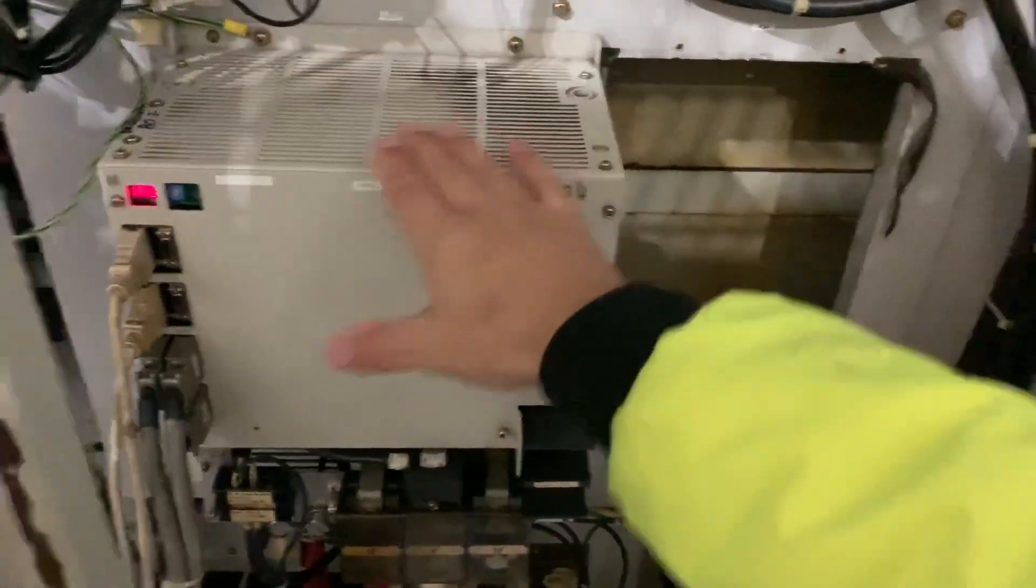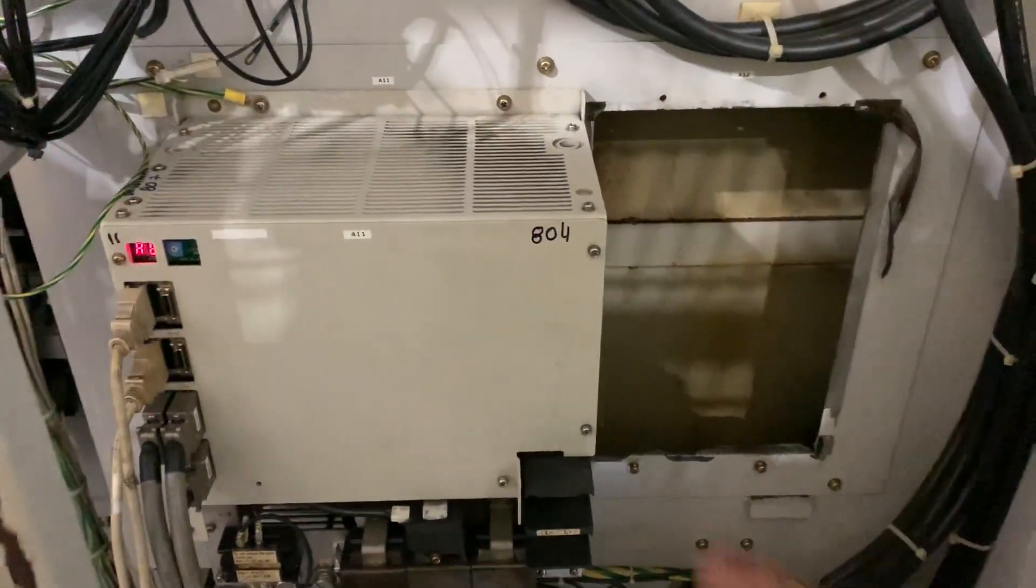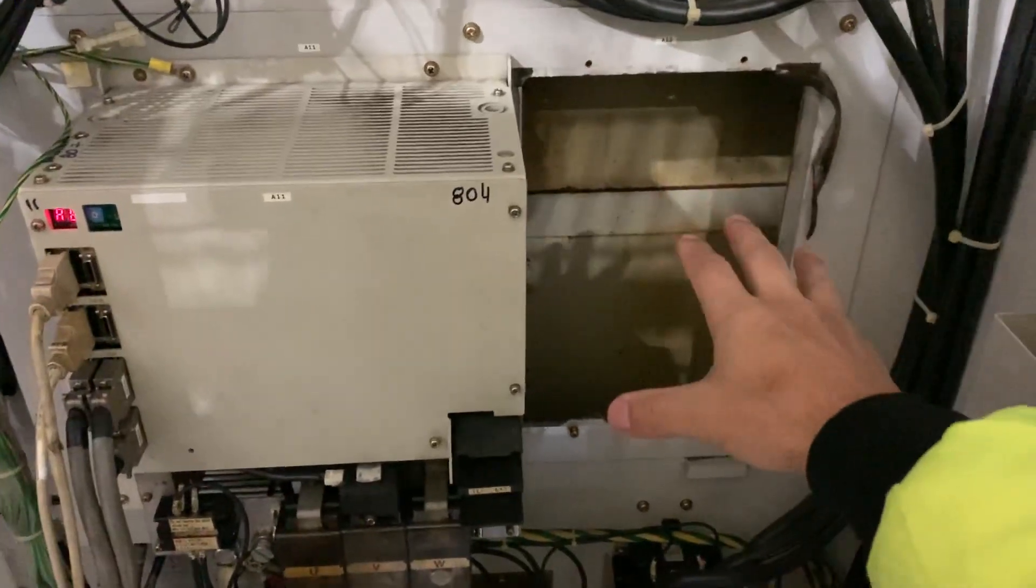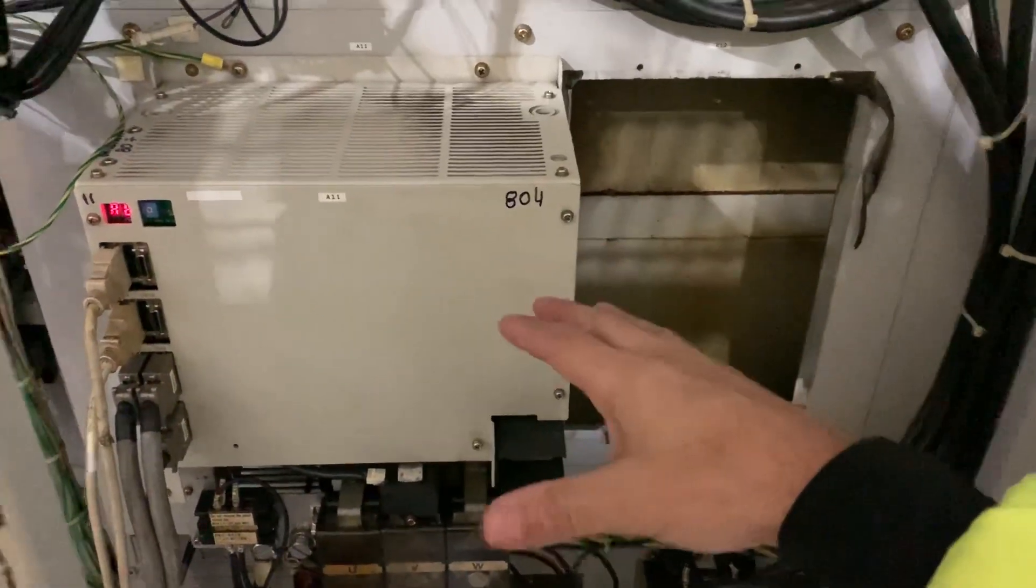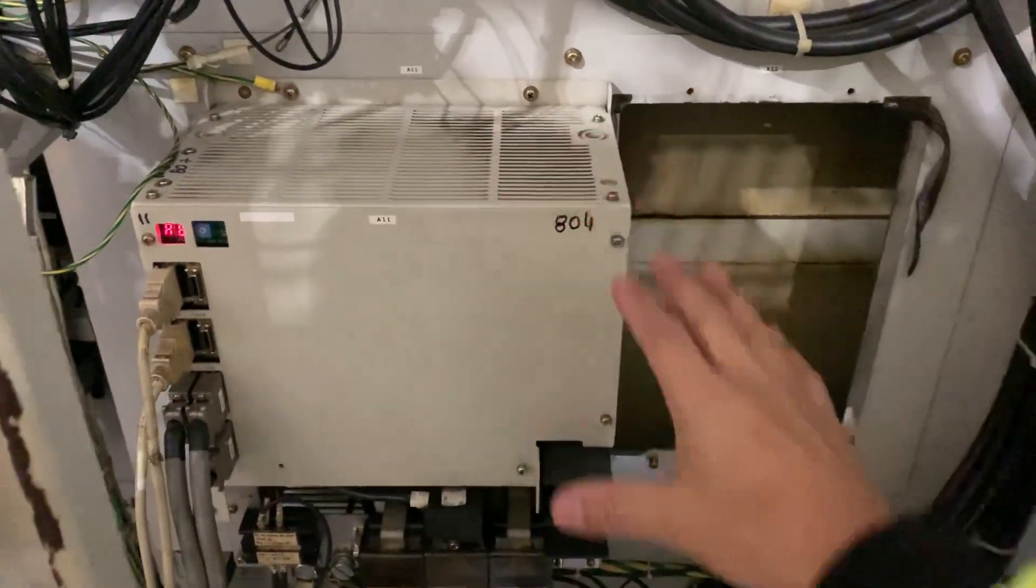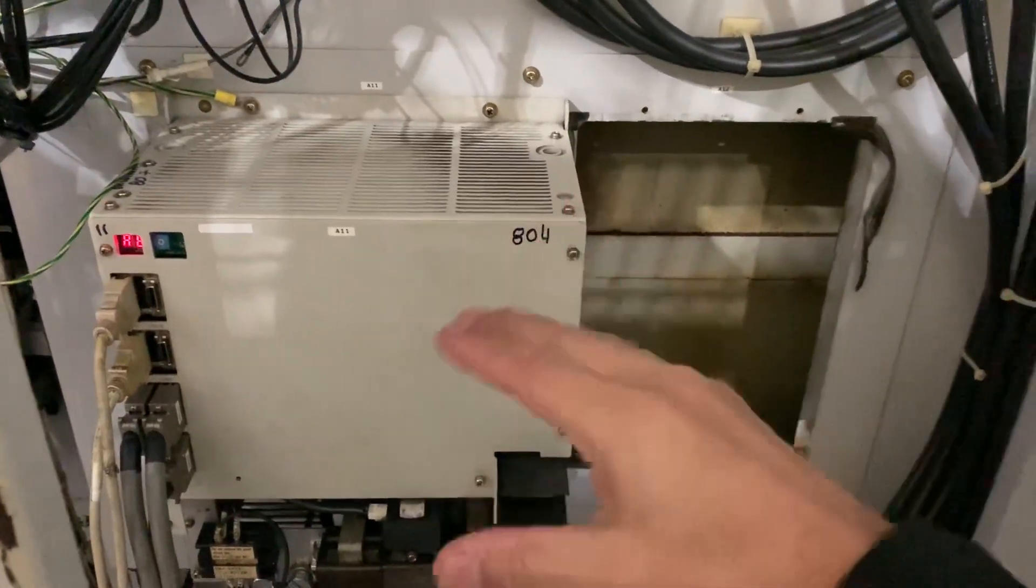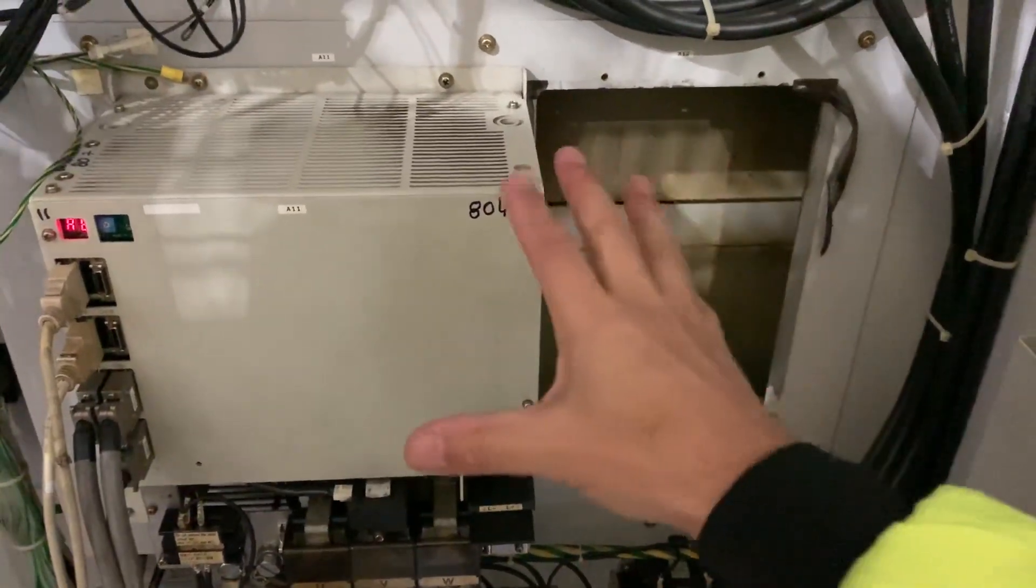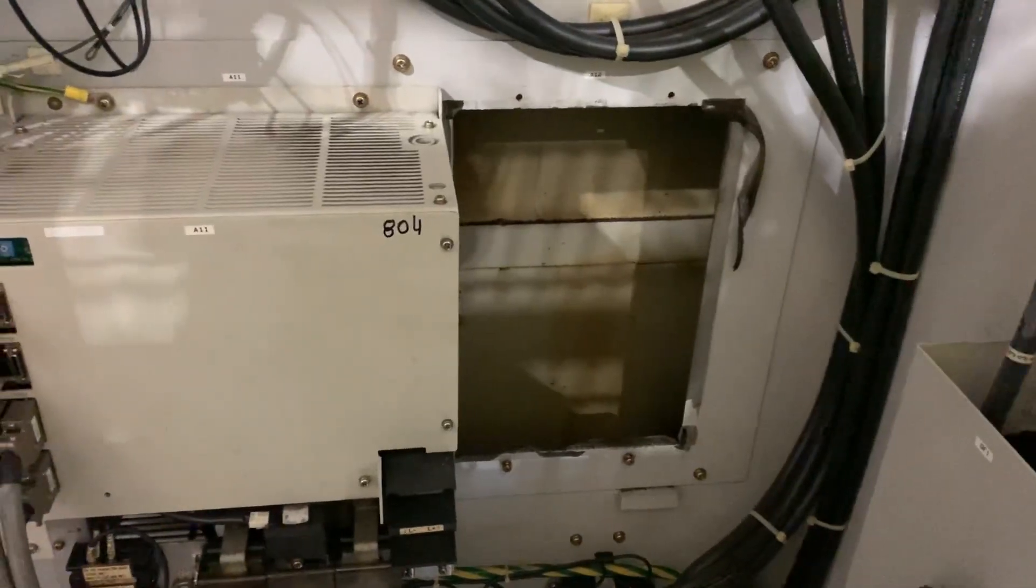You're going to be able to disable the spindle drive, including the power supply that we already removed. So once you do that, if you don't have any other alarm, you're going to be sure that the problem is on the power supply we removed.